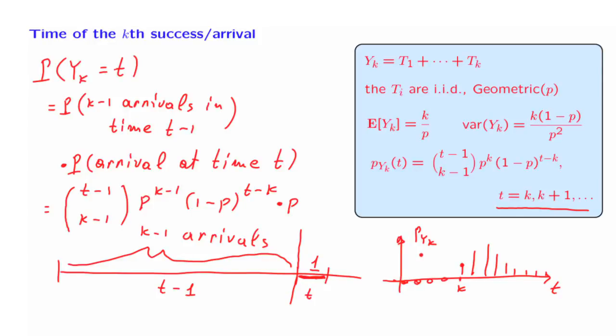If we consider different values of k, of course, we will get a different pmf. The pmf of y3 is different than the pmf of y2. And the pmf of y3 will generally sit to the right of the pmf of y2, because the third arrival generally will take longer to occur than the second arrival.